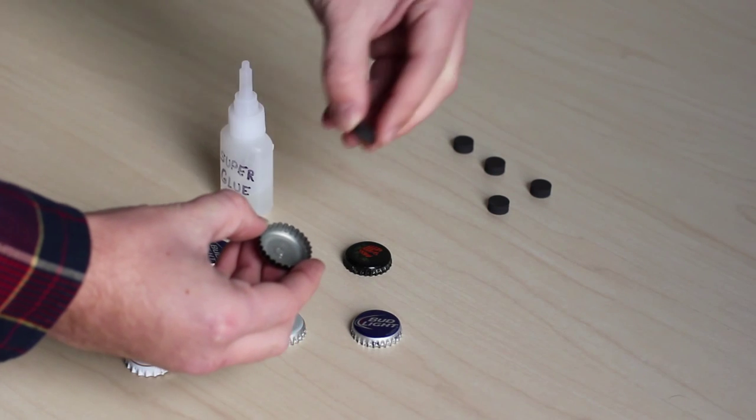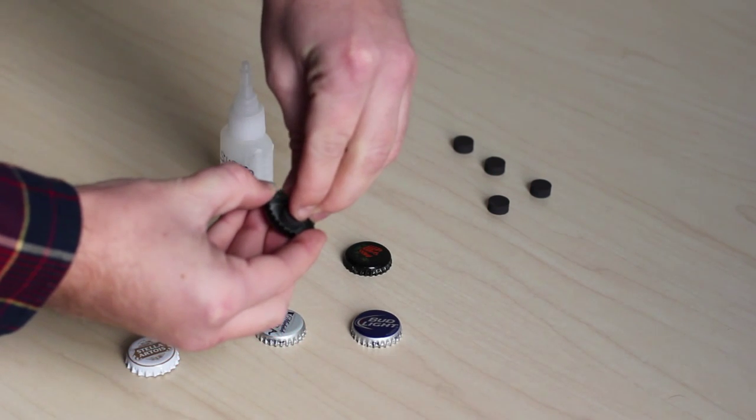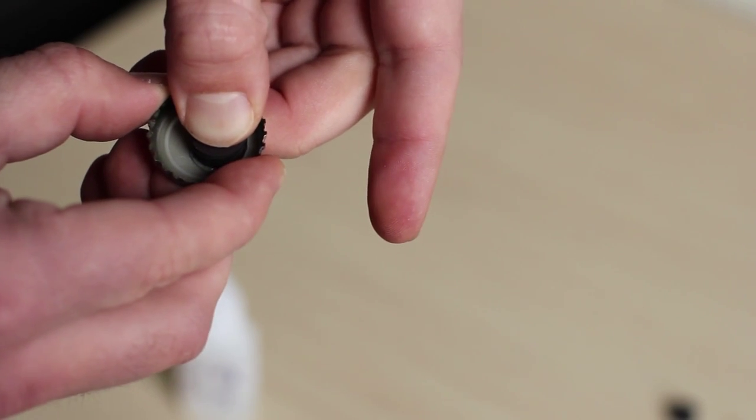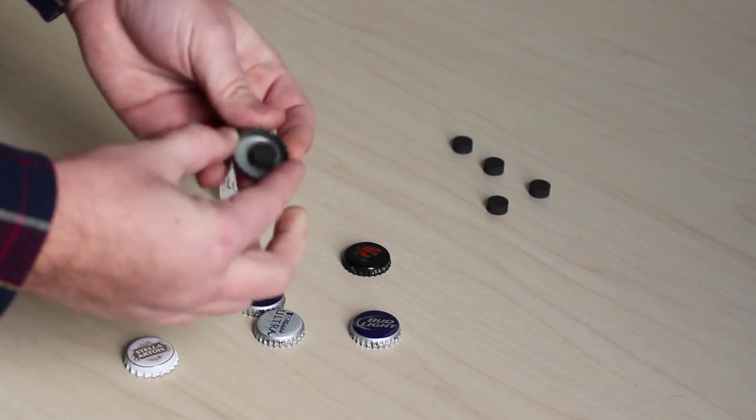Then take your magnet and press it onto the superglue and press and hold it for a few seconds, and then you set it aside to dry.